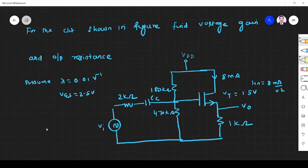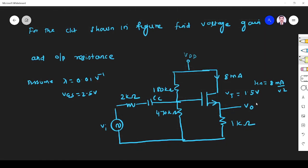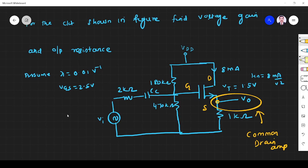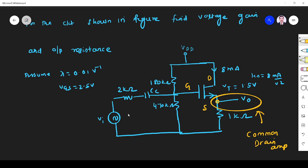So first we have to identify what is the configuration. You see the output is taken across source - this is gate, this is drain, this is source. Since output is taken across source, then it is common drain amplifier.